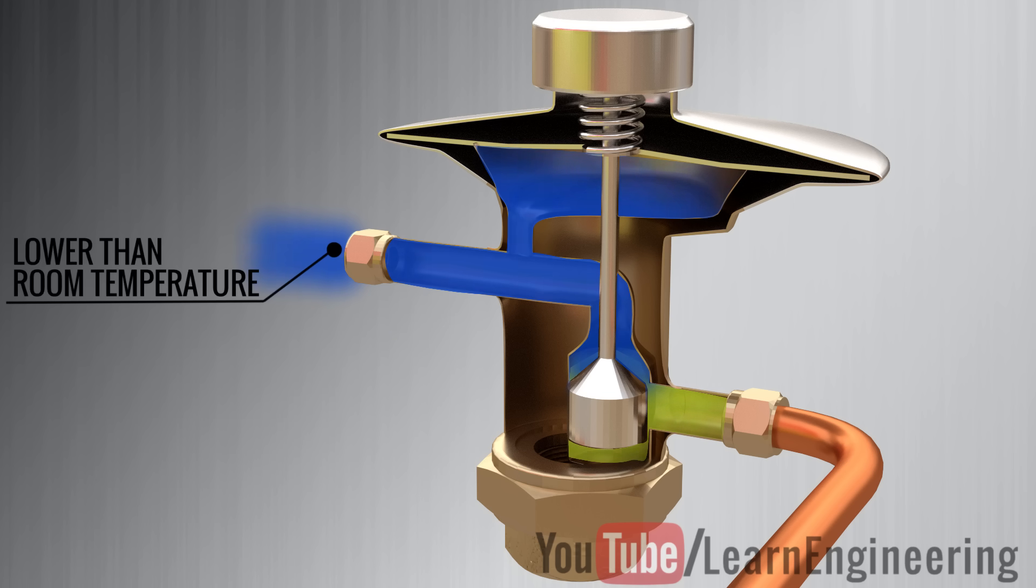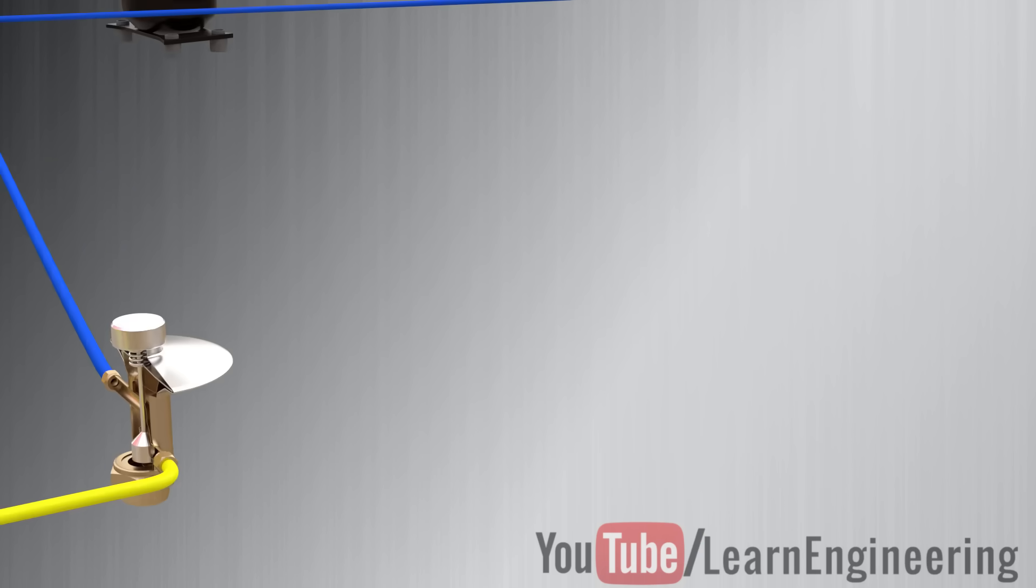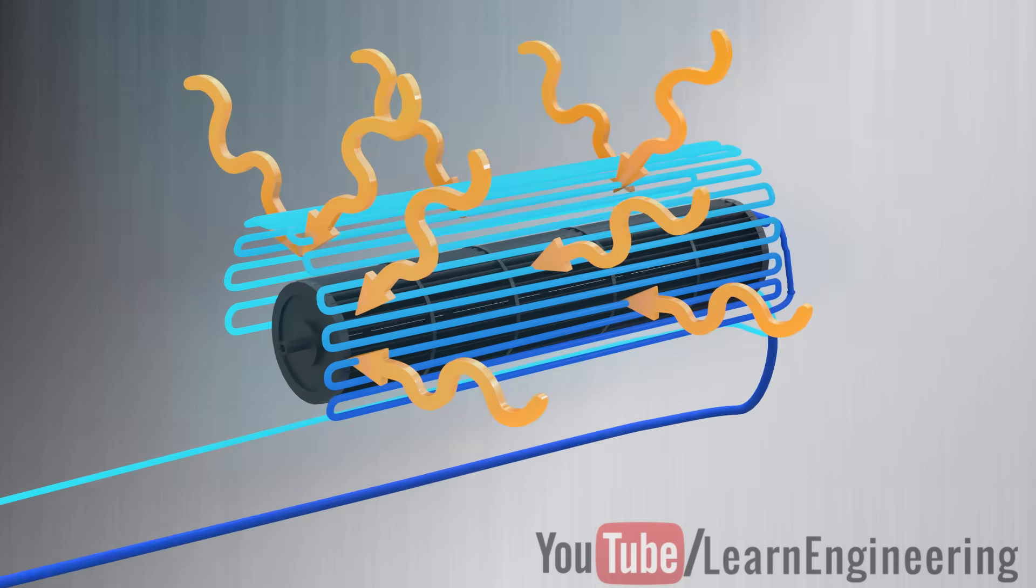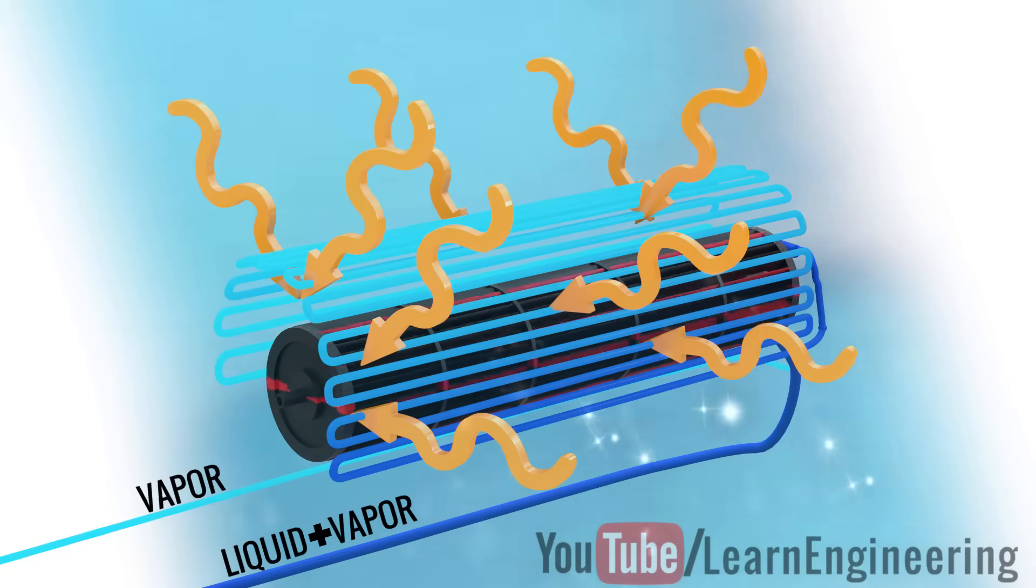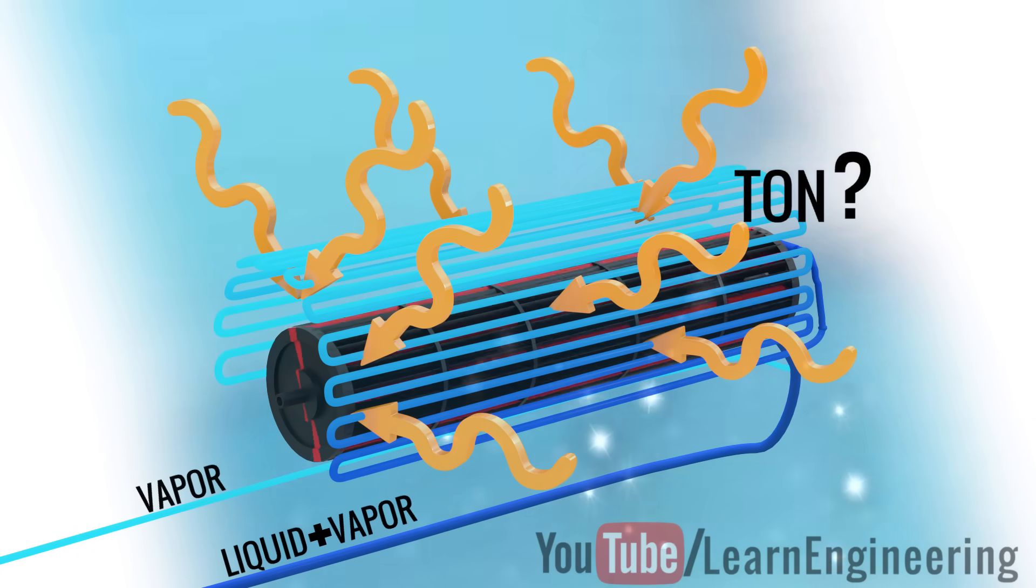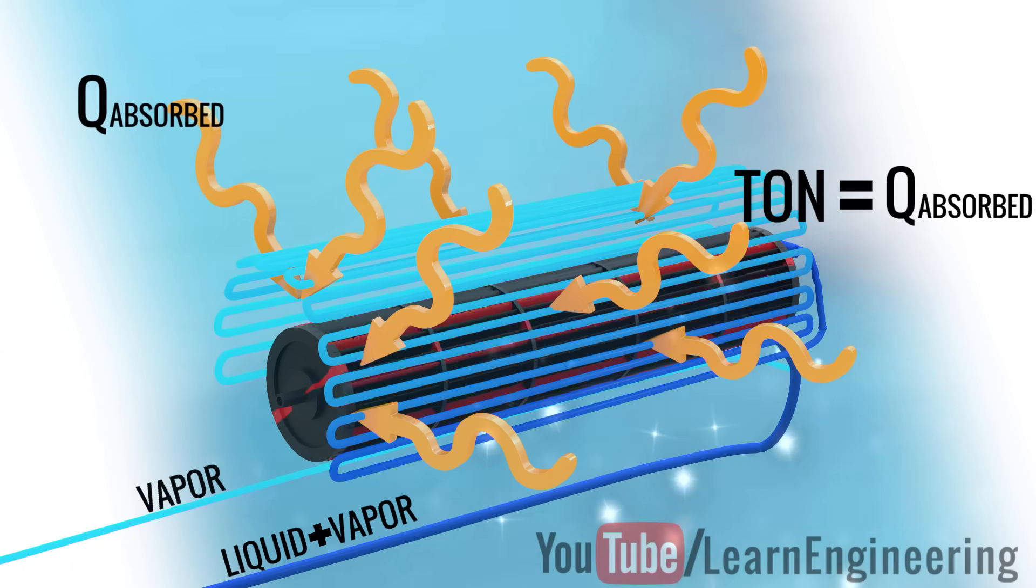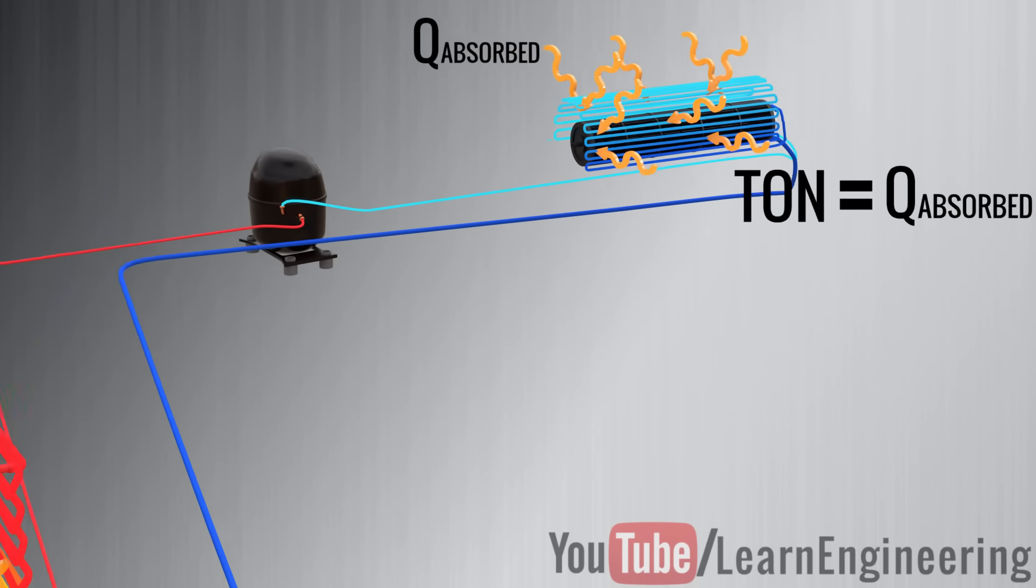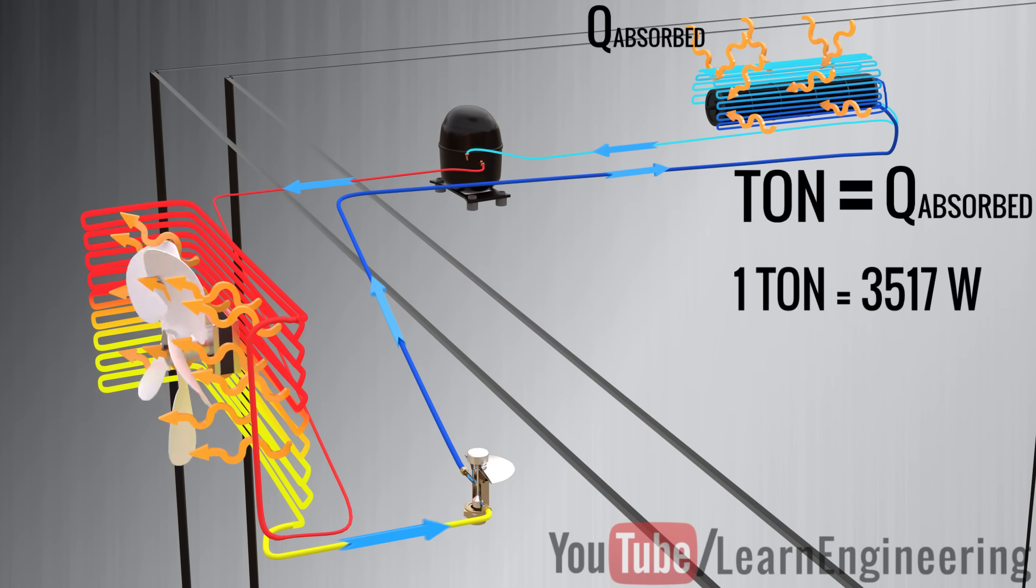This low-temperature refrigerant should be at a temperature lower than the room temperature. So, by passing the room's air over the evaporator coil, the room temperature will drop. The refrigerant gets converted to vapor during this heat absorption process. You might have heard a term called tonne associated with the air conditioners. The tonne represents how much heat the evaporator can absorb from the room. In simple words, it represents an air conditioner's heat removal capability.